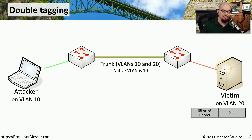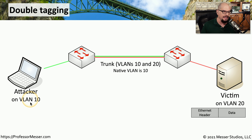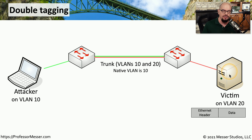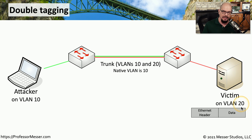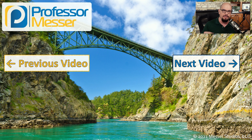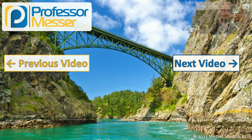Although the victim has no way to communicate back to the original attacker device because that attacker is on a different VLAN, the attacker can send any type of traffic and as much traffic as they would like to this victim that is clearly on a completely different VLAN.